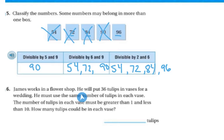James works in a flower shop. He will put 36 tulips in vases for a wedding. He must use the same number of tulips in each vase. The number of tulips must be greater than 1 and less than 10. How many tulips can be in each vase? He's got 36. 2 goes into 36 evenly, as does 3, 4, 6, and 9. All of those numbers are greater than 1 and less than 10, and they go in equally.